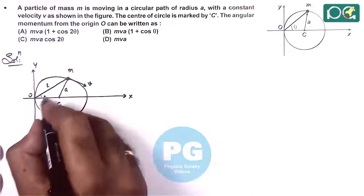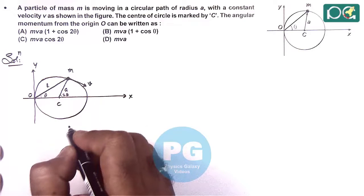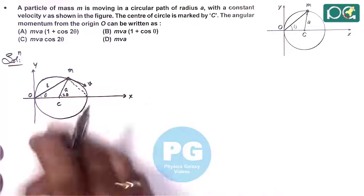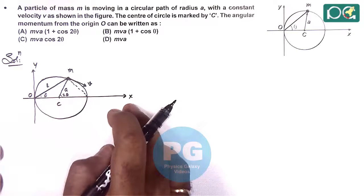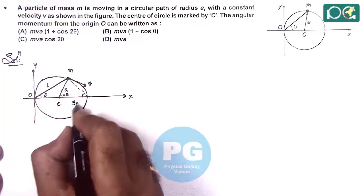Now this angle is given to us as theta, so this will be 2 theta. And here if we join this mass M with the other end of the diameter along x axis, then we can see this angle will be 90 minus theta.